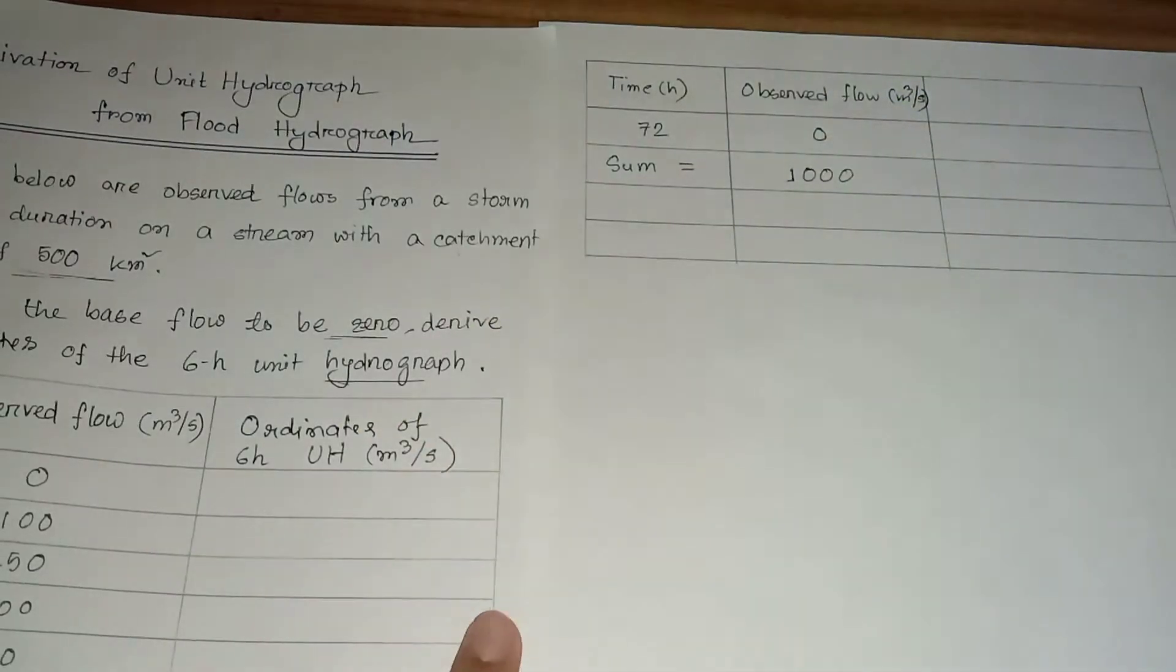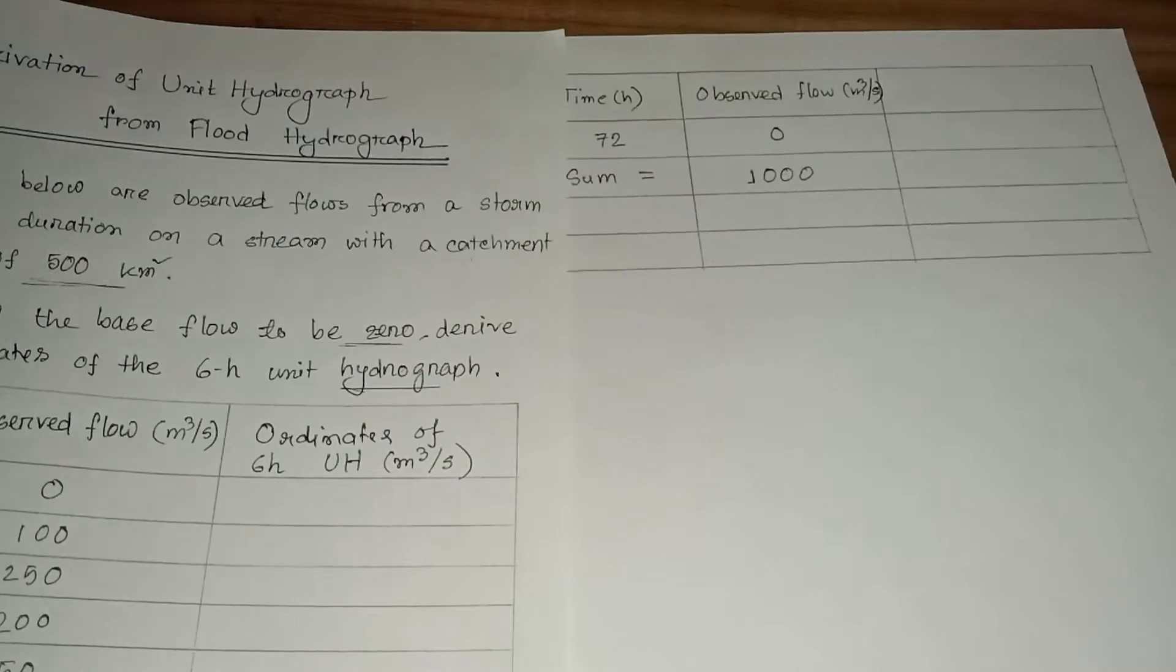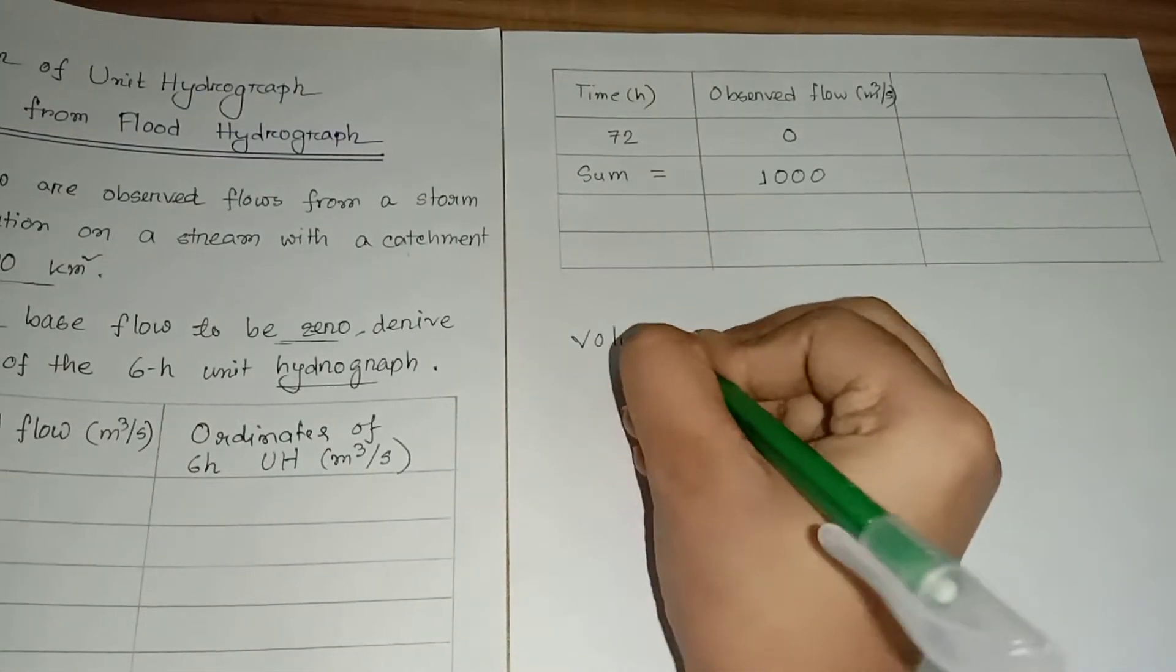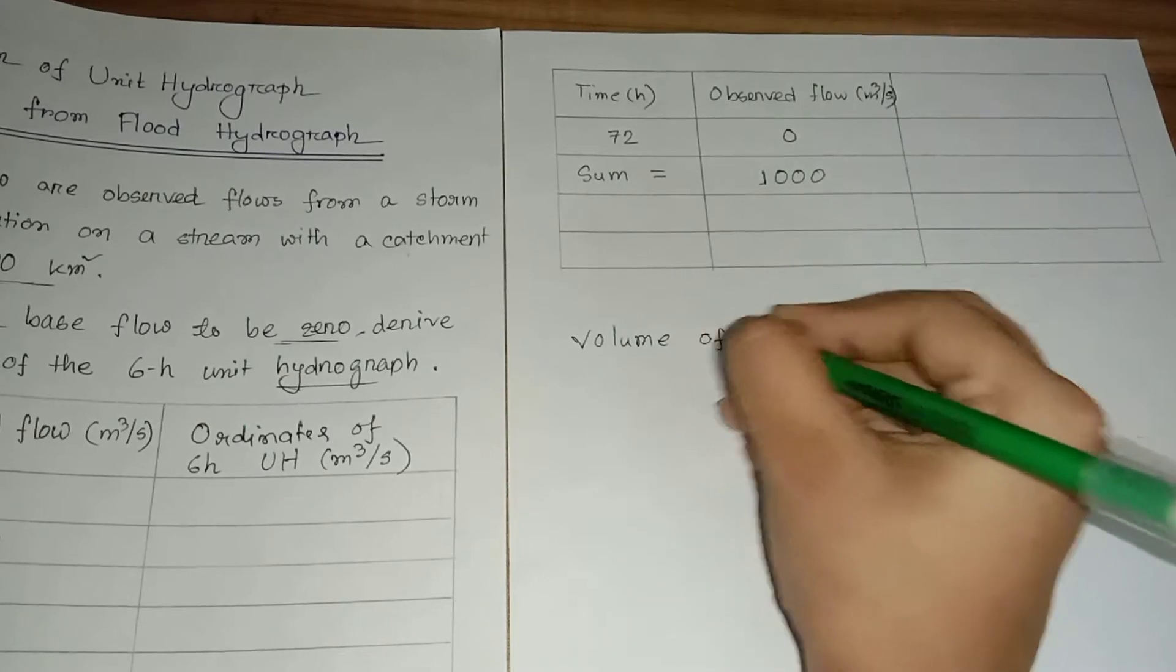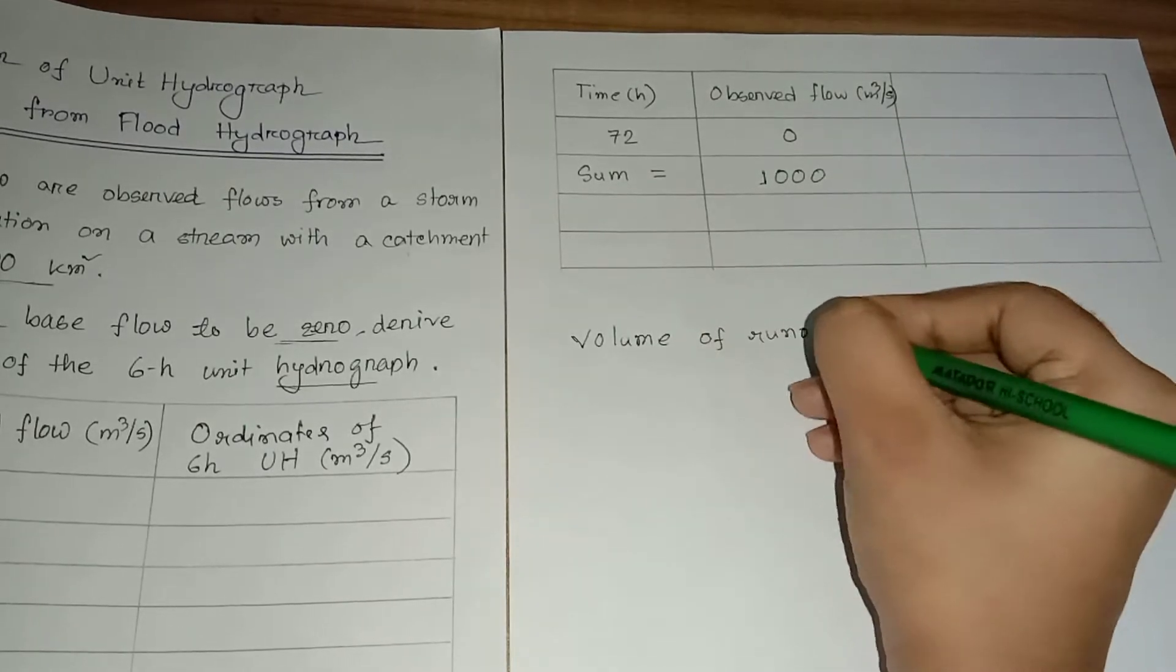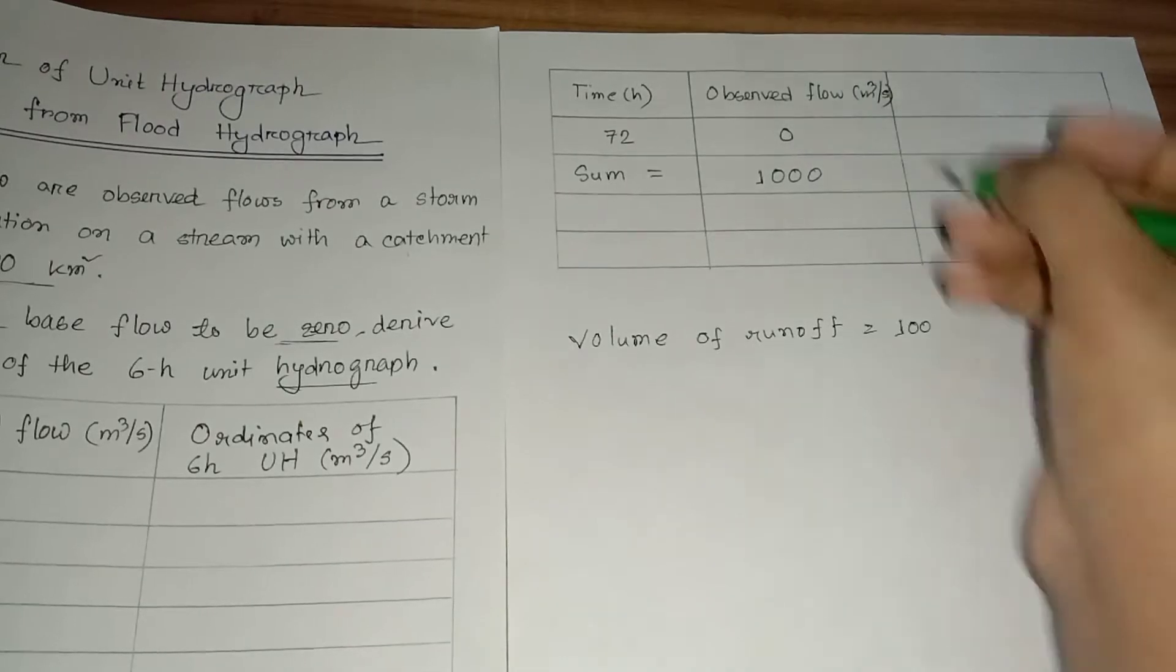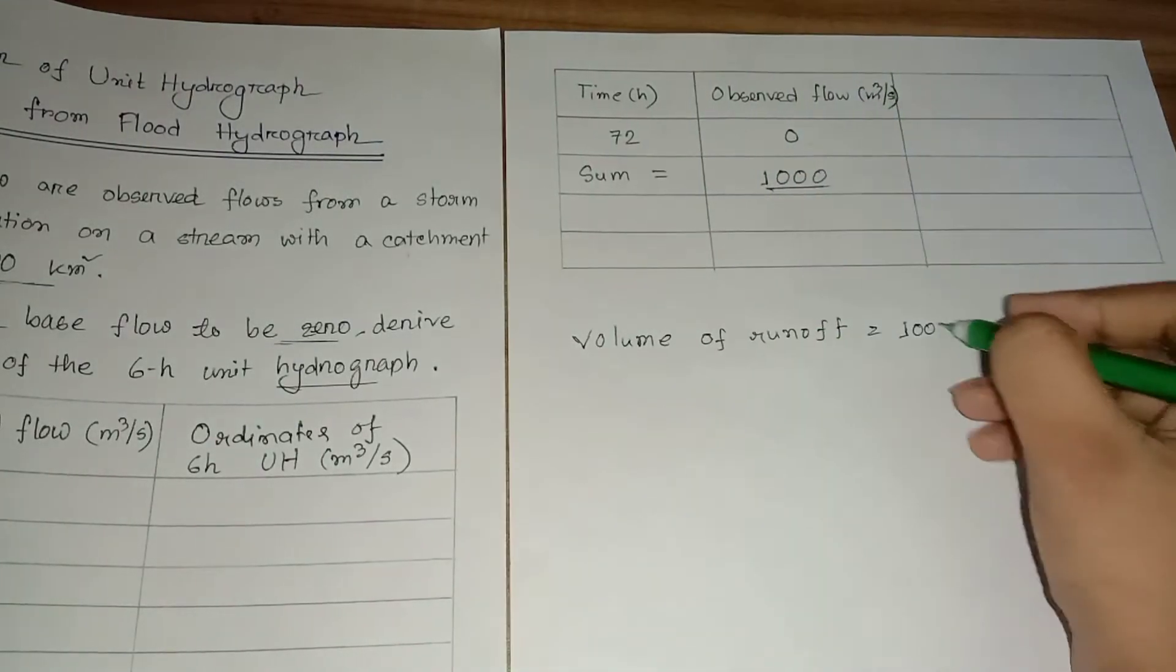1000 meter cube per second is the sum. Now I will write the calculation.